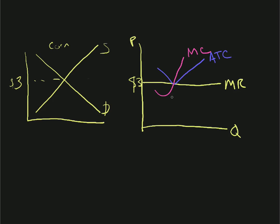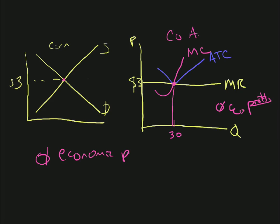Welcome to our fifth and final Blackboard discussion on pure competition. In this case, the marginal cost is equal to the marginal revenue right here. That means they'll produce about this much corn — let's say this is Farm A. In this situation, they're ending up getting zero economic profits. With zero profits, is somebody going to come into this market for corn? The idea is no. So when we have zero economic profits, in the long run, nothing's going to happen — no one enters or exits the market.